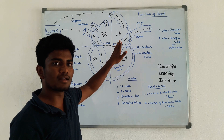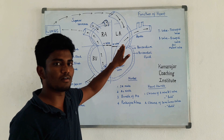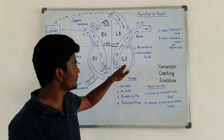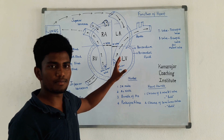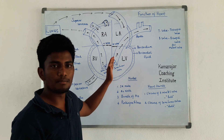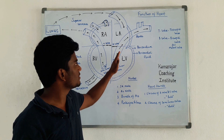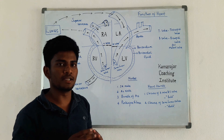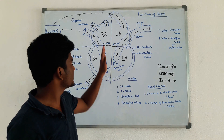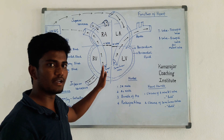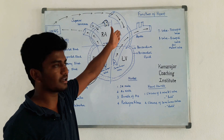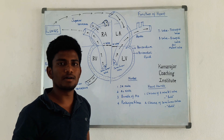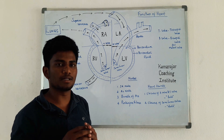The bicuspid valve is between the left atrium and left ventricle. The blood needs to come to the left ventricle. When the ventricle contracts, the blood goes out to the other parts of the body. So the path is: right atrium → right ventricle → lungs → left atrium → left ventricle → other parts of the body.